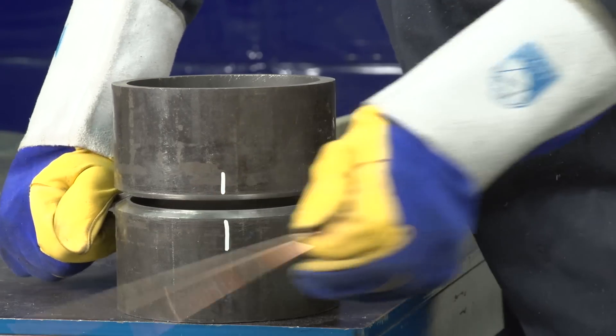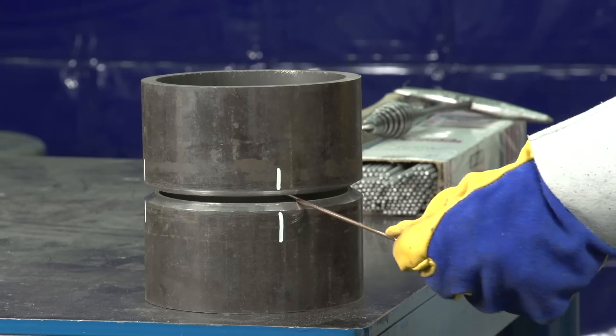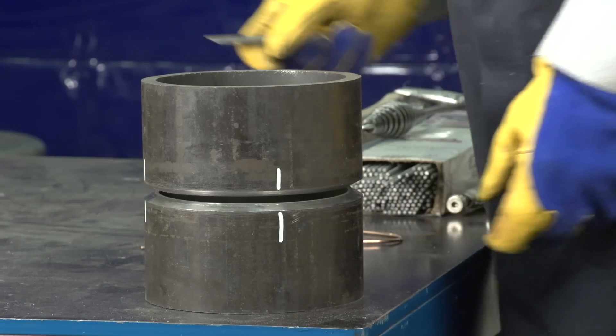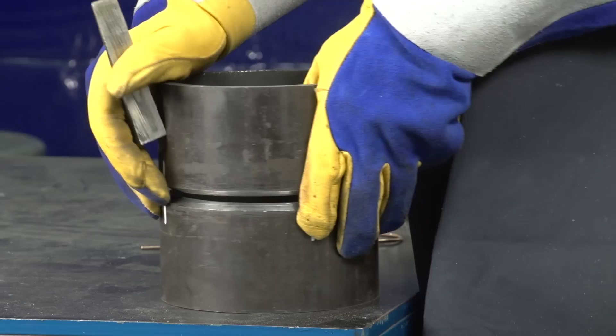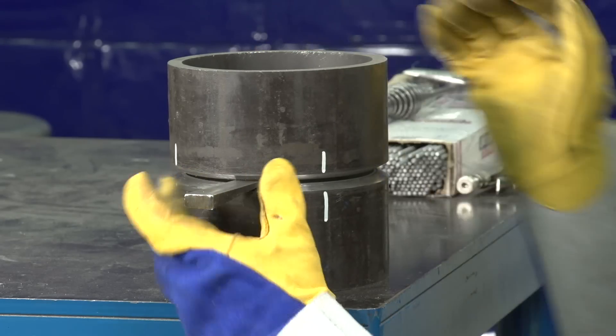Allow the tack to cool and remove the spacer. Rotate the pipe 180 degrees, then reinsert the end of the spacer close to where you are going to make the next tack. This is a time when the wedge is useful to adjust the space.